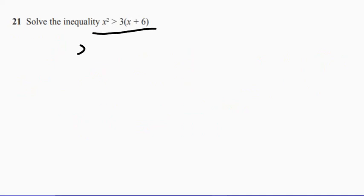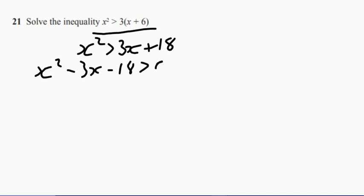So let's start by multiplying out of the bracket. So we get 3x plus 18. Now let's just take minus 3x. Let's take it over to the left and the 18 as well. There we go. Right. We've got a quadratic. Let's factorize it. See what it looks like.